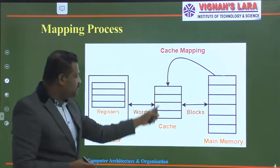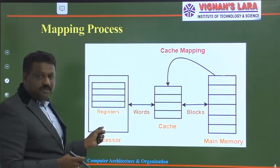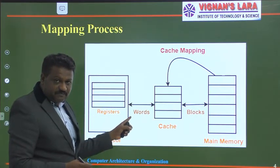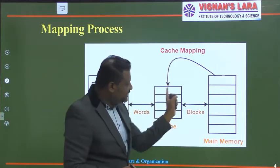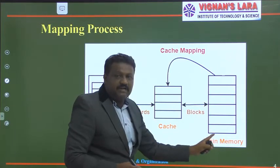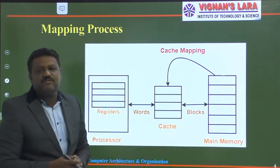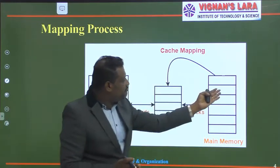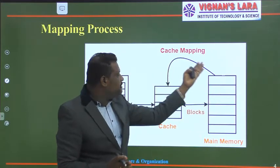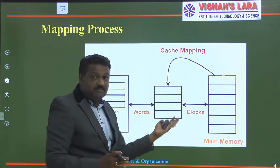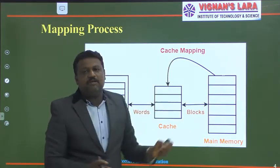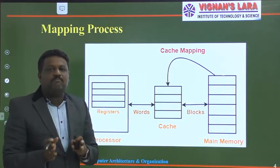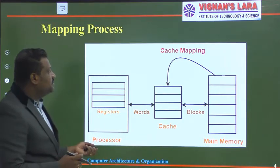The information transferred between a processor and a cache is done in terms of words, but data transferred between cache memory and main memory is done in terms of blocks. How main memory blocks occupy cache memory lines is what we call cache mapping, or mapping functions or mapping methods.